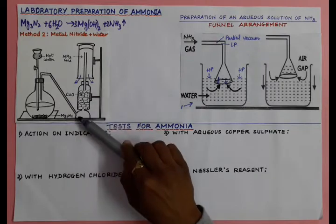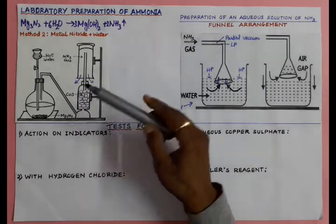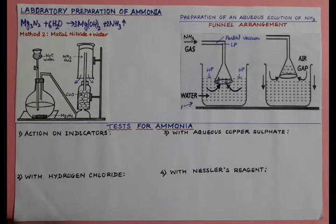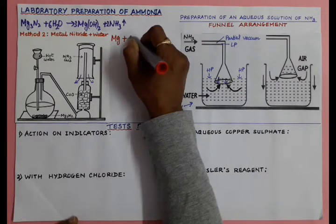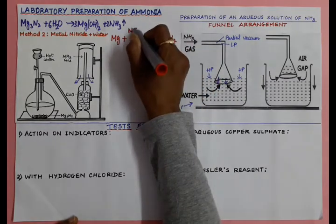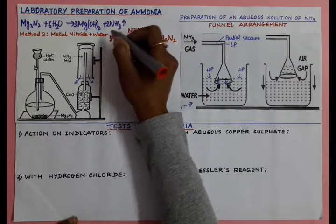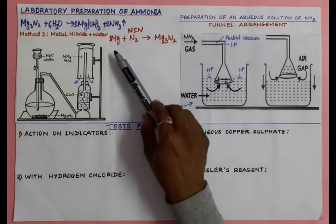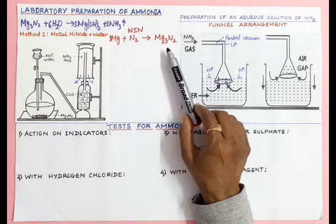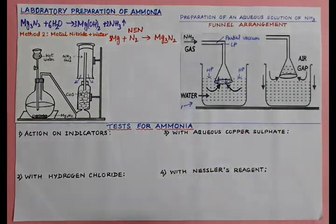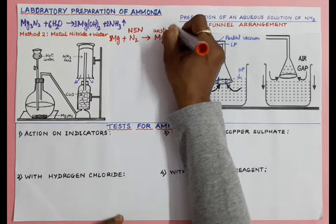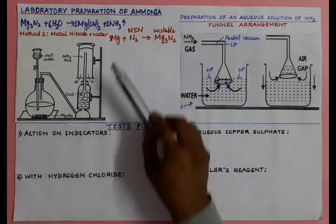As magnesium nitride is unstable, it easily breaks down and ammonia gas is released. Magnesium nitride is unstable because nitrogen has a triple covalent bond (N≡N), requiring a large amount of heat energy to break. Only the first five highly reactive metals react with nitrogen to form nitrides, and since nitrogen is not very reactive, the bond formed between magnesium and nitrogen is not strong.